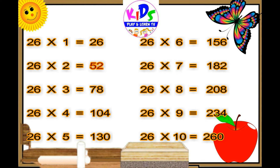26 sixes are 156. 26 sevens are 182. 26 eights are 208. 26 nines are 234. 26 tens are 216.